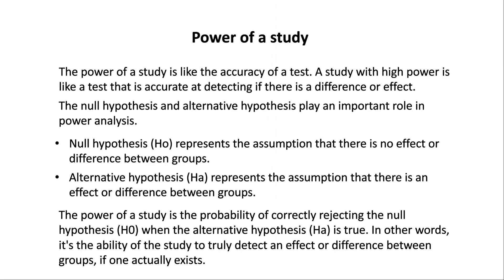The null hypothesis and alternative hypothesis play an important role in power analysis. The null hypothesis, H0, represents the assumption that there is no effect or difference between groups. The alternative hypothesis, HA, represents the assumption that there is an effect or difference between groups.